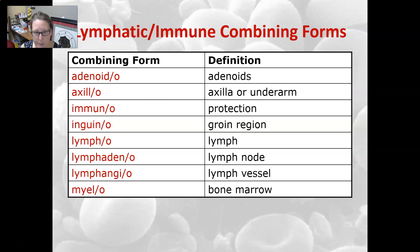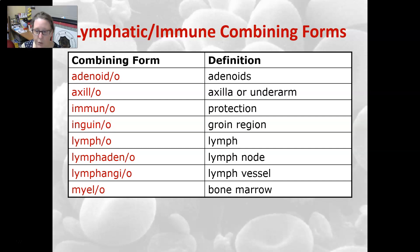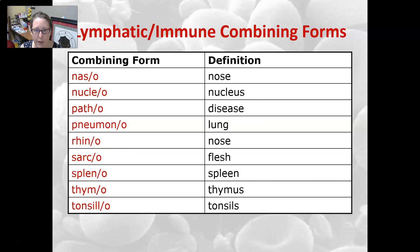Adenoido refers to adenoids, axolo to the axilla or underarm, immuno refers to protection, inguino to the groin region, lympho to lymph, lymphadeno to a lymph node, and lymphangio to a lymph vessel. Myelo refers to the bone marrow, naso to the nose, nucleo to nucleus, and patho to disease.